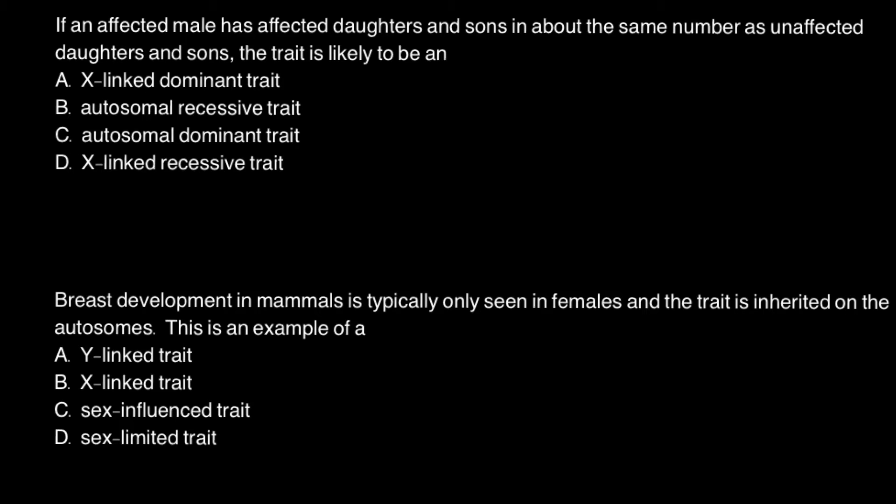So here is the first question: if an affected male has affected daughters and sons in about the same number as unaffected daughters and sons, the trait is likely to be. And here are four answers to choose from: answer A, X-linked dominant trait; B, autosomal recessive trait; C, autosomal dominant trait; and D, X-linked recessive trait.